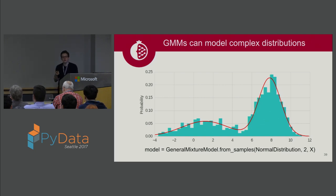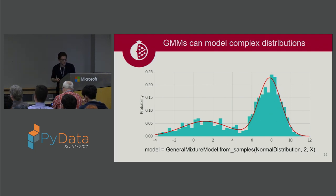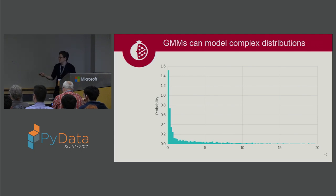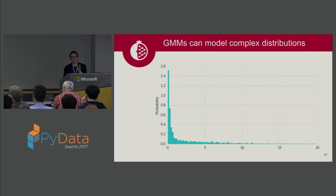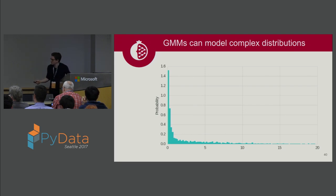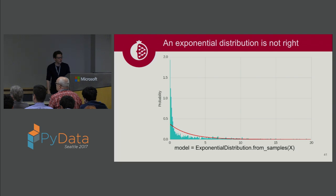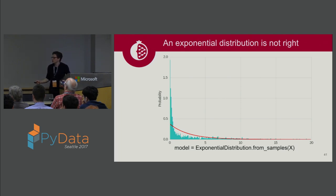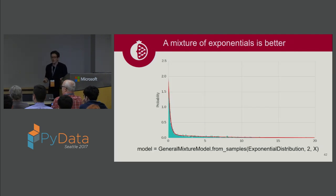GMM actually stands for general mixture model in Pomegranate — mixtures of any type of distributions, not just Gaussians. Looking at data that seems like an exponential distribution, a single exponential distribution doesn't fit well — it's too low at the beginning and tails off too fast. You can do better with a mixture of two exponential distributions: one steep exponential to model the initial peak, and one shallow exponential to model the tail.